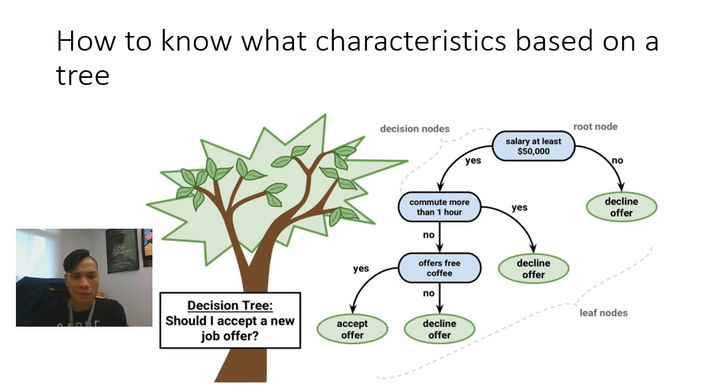I'm going to give you an example of how do we know what characteristics is needed based on the tree. If you look at this tree here, the decision is should I accept a new job offer? So therefore, the target that we're trying to look at is whether or not we want to accept a new job offer. If we're looking at the tree here, we can see that there is only one leaf node that says accept offer. Now let's traverse the tree and find out what are the characteristics that will reach to this particular decision here.